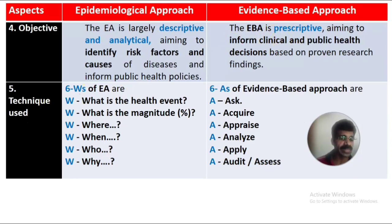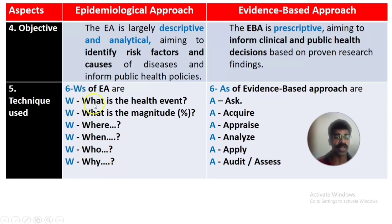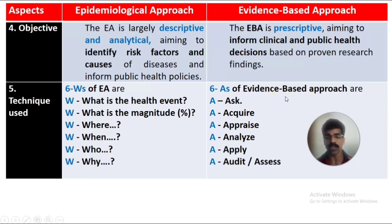The fifth aspect is techniques used. In the epidemiological approach, data is collected using the technique of six W's: what is the health event or problem, what is its magnitude, where did the problem start, when it occurred, who are the people affected, and why it is caused. In the evidence-based approach, we use the six A's: Ask, Acquire (enquire), Appraise, Analyze, Apply (application), and Audit or Assess (evaluate).